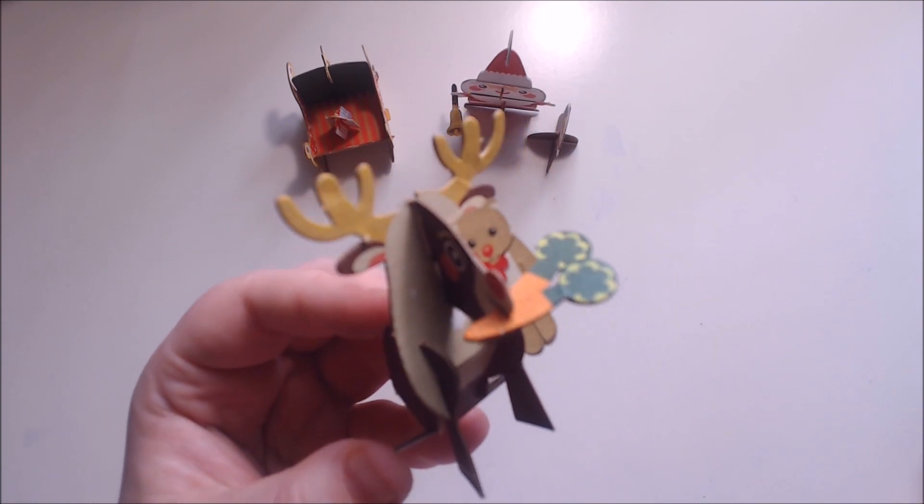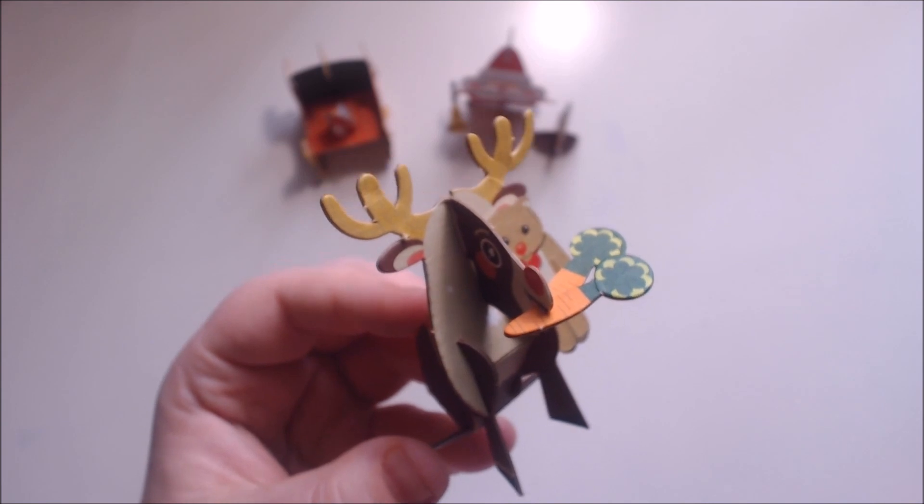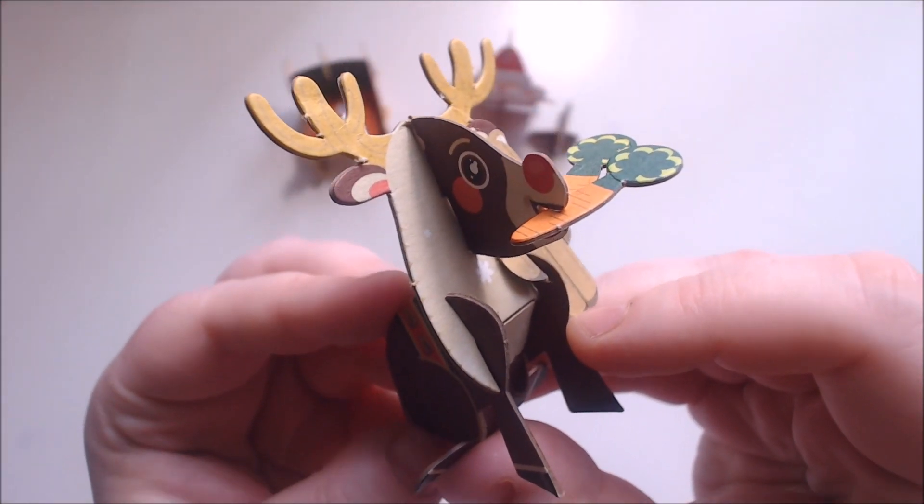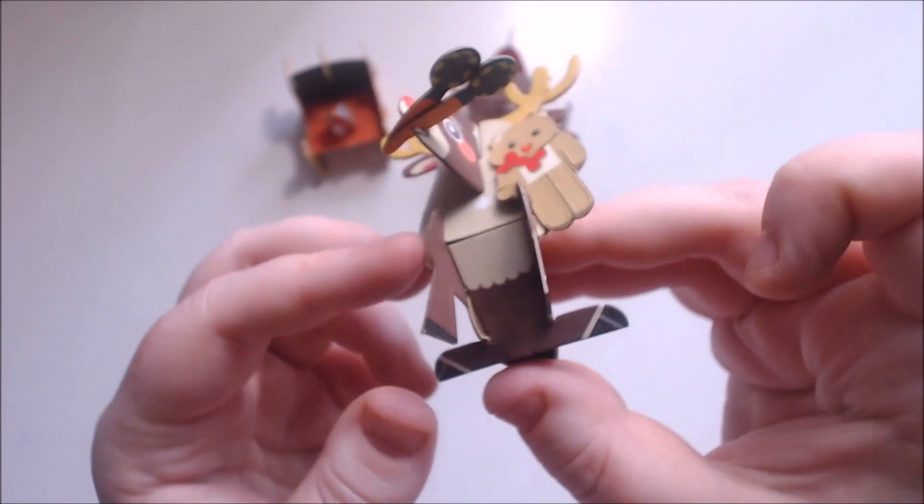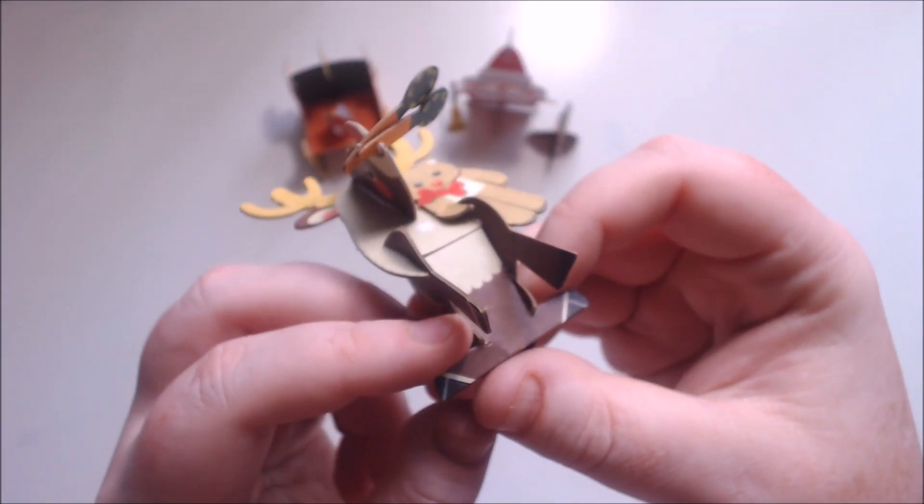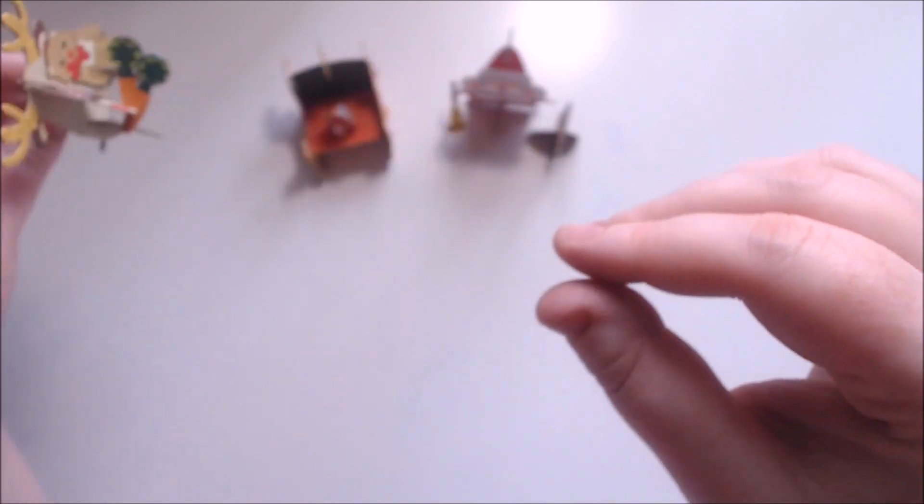And now let's have a close-up look, so I'll just bring the camera into focus for you. And first of all we have Rudolph the red-nosed reindeer, his little carrots and his little teddy bear friend. And that's quite cute. I kind of like how it goes together. It's really sturdy, so it stays together, it doesn't come apart.